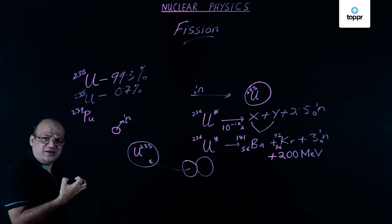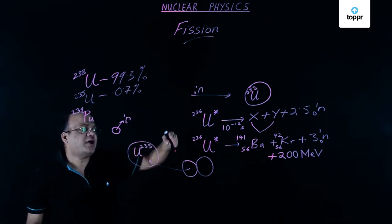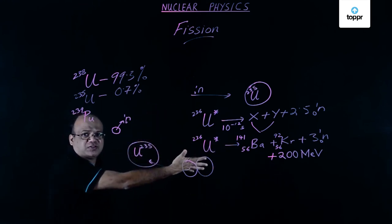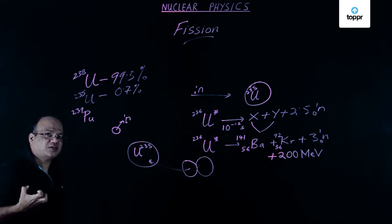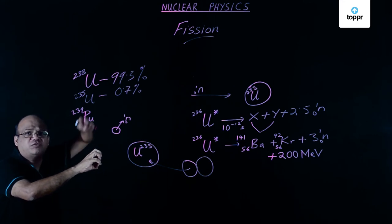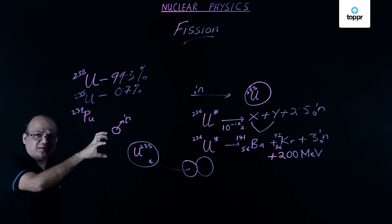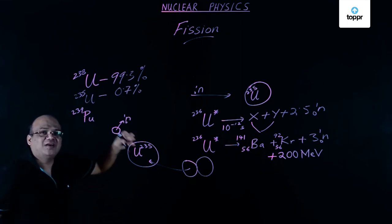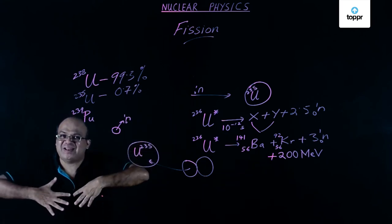We also learned about chain reaction. A neutron is required to start the reaction, and more neutrons are produced in the reaction, so we can have a chain reaction. If the sample size is small most neutrons will escape, but if the sample size is bigger than the critical size — the size of a cricket ball — we will have a chain reaction, and that is what an atom bomb is.